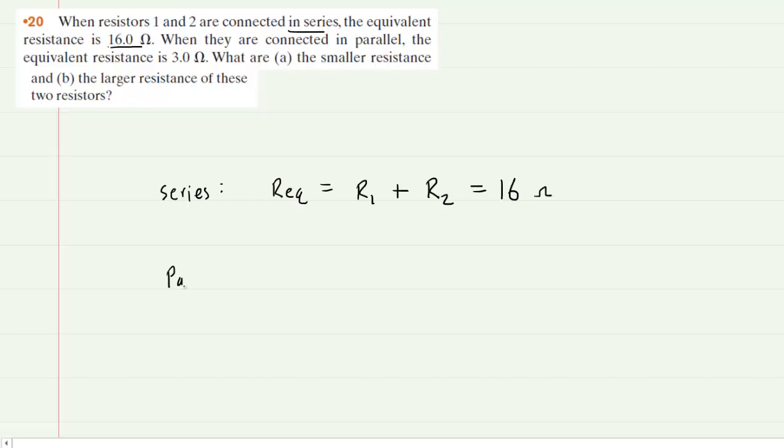In the parallel arrangement the equation is slightly more complex. We have 1 over the equivalent resistance is equal to 1 over R1 plus 1 over R2. And the question tells us that in this arrangement, in parallel, the equivalent resistance is equal to 3 ohms.